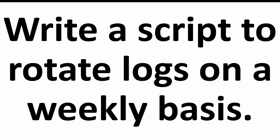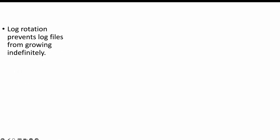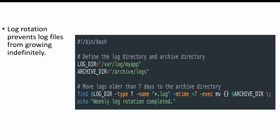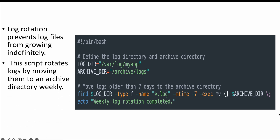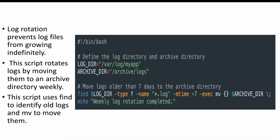The next question is: write a script to rotate logs on a weekly basis. Log rotation helps prevent log files from growing too large — mainly from a disk space and utilization perspective — and keeps only the logs we need. This script rotates logs by moving them to an archive directory weekly. We give the log directory and archive directory, then use the find command to find logs older than seven days and move them to the archive directory, so the log directory always has sufficient space.